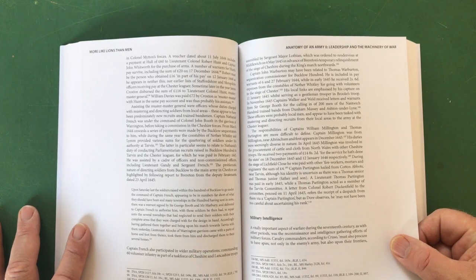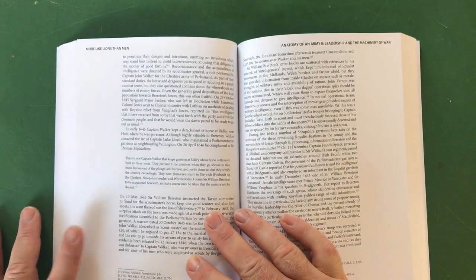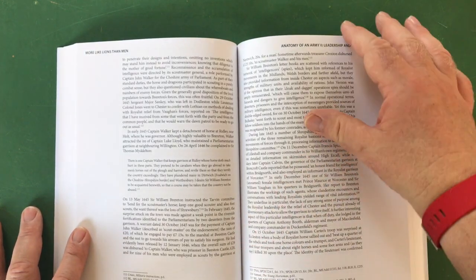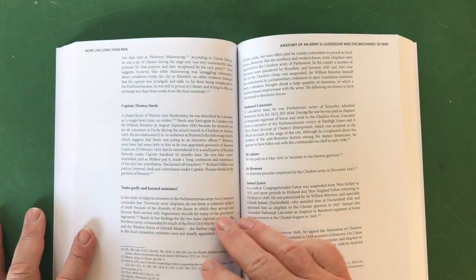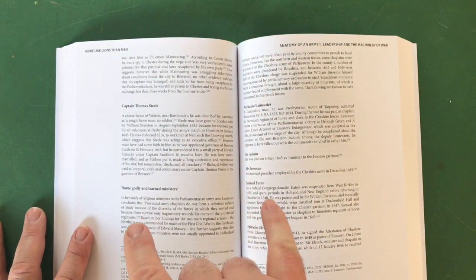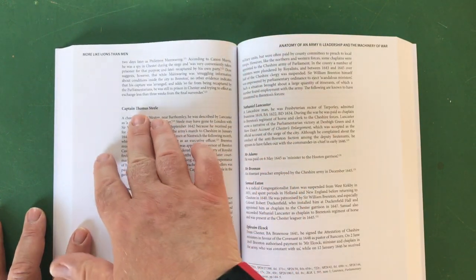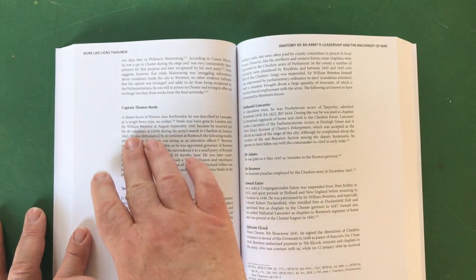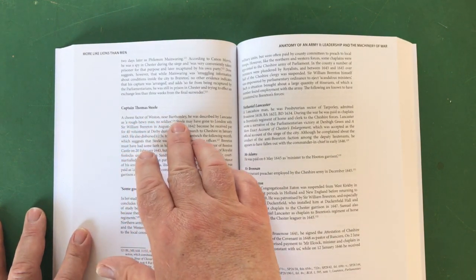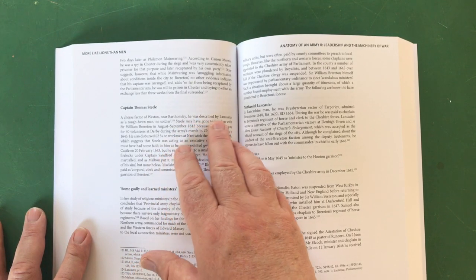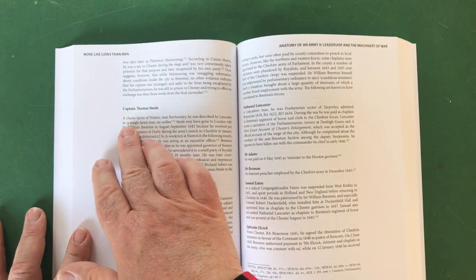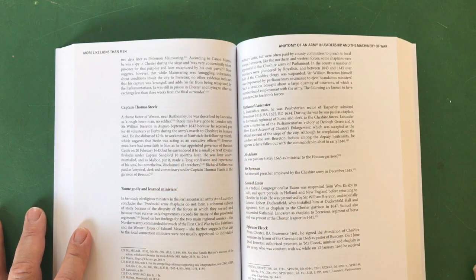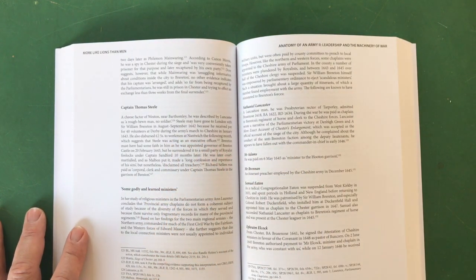Military intelligence - again probably not something we associate with the English Civil War, but here we are. There were people out and about spying, gathering intelligence and so on. Fascinating stuff and some named people again. Captain Thomas Steel - and he's a cheesemonger of Weston near Barthomley. He was described by Lancaster as a rough-hewn man, no soldier. Fascinating. Who are these people? Buy the book and find out.